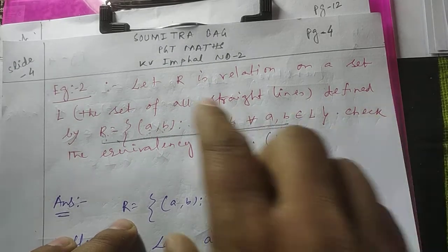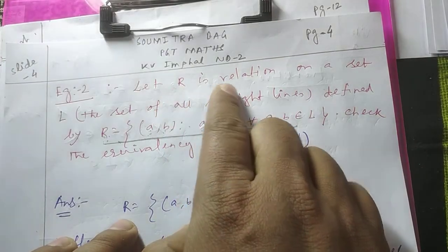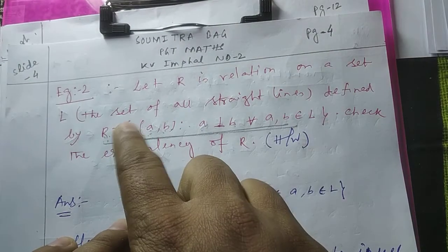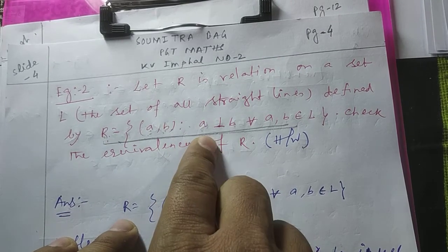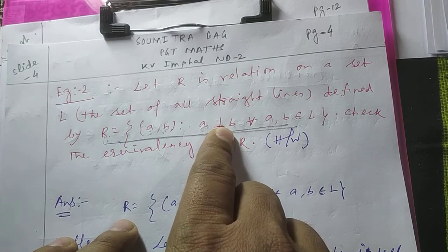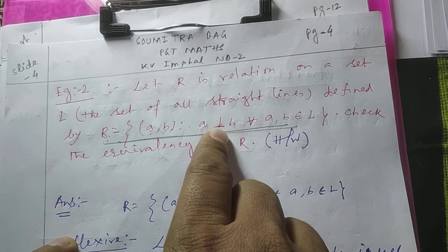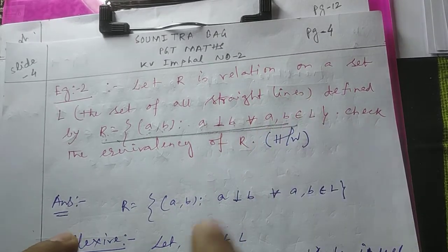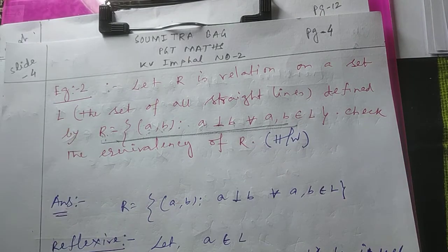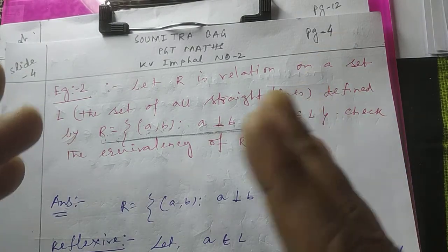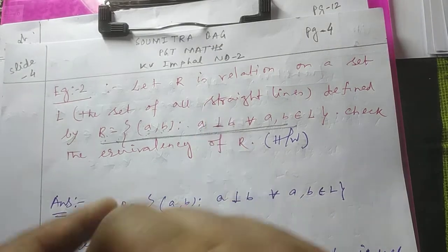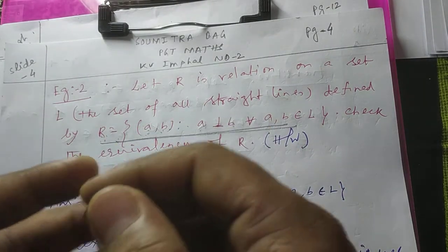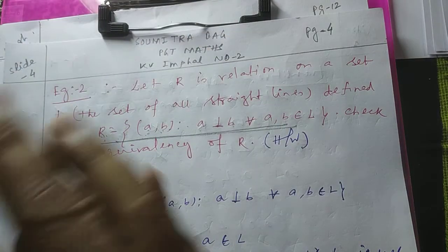Now look at the homework. Let R be a relation on the set L, where L is the set of all straight lines, defined by R = {(a, b) such that a is perpendicular to b}, for all a, b belonging to L. You have to check whether R is an equivalence relation or not. This question is exactly the same as the parallel lines question from the last video, except this one is about perpendicular lines — that is why I left it as homework, because they are almost the same.